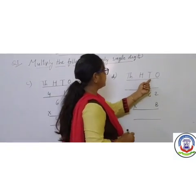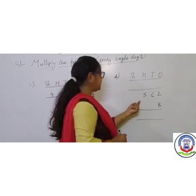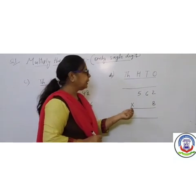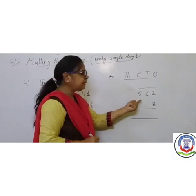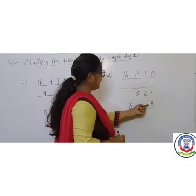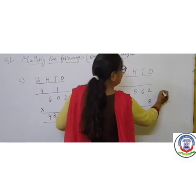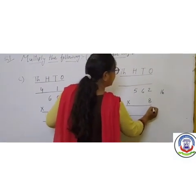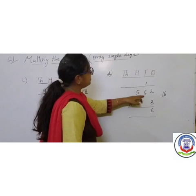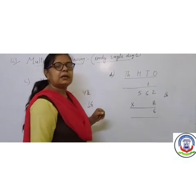Next: 1's place is 2, 10's place is 6, 100's place is 5 — giving us 562. Multiply by 8. Start with 1's place: 8 multiplied by 2 — 8 twos are 16. Write 6 in the 1's place, carry forward 1 to the 10's place. Next, 10's place: 8 multiplied by 6 — 8 sixes are 48. Plus carry forward 1 equals 49.